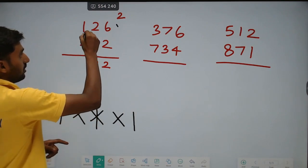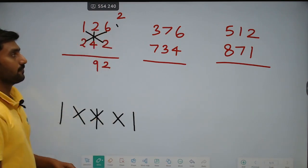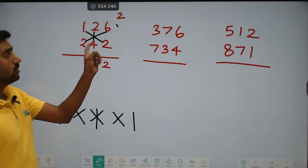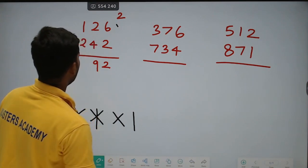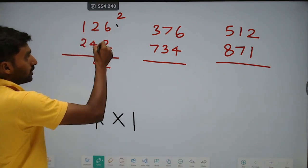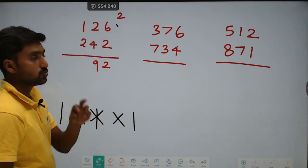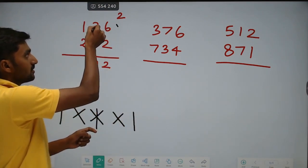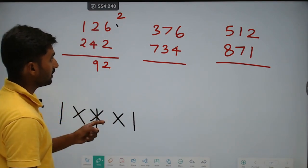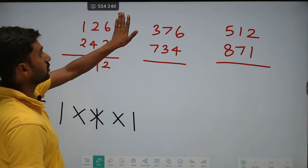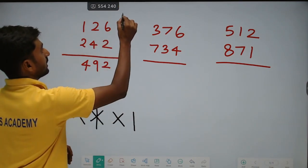Next is star — diagonal multiplication. In this star: 1 into 2 plus 2 into 6 plus 2 into 4. So 1 into 2 is 2, plus 2 into 6 is 12, gives 14, plus 2 into 4 is 8, gives 22. Already carry 2, so 22 plus 2 is 24. Write 4, again carry 2.